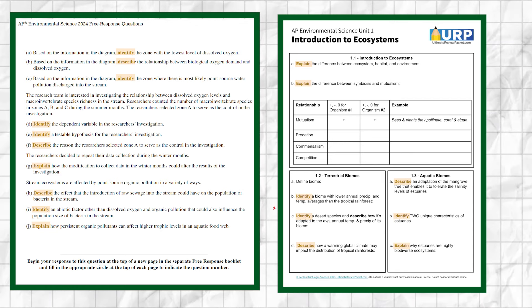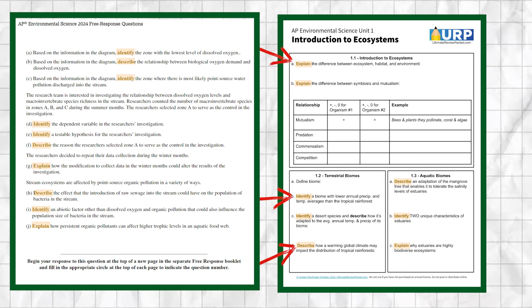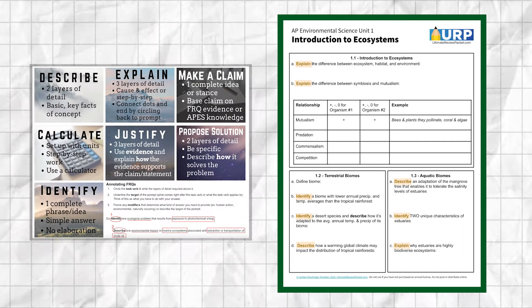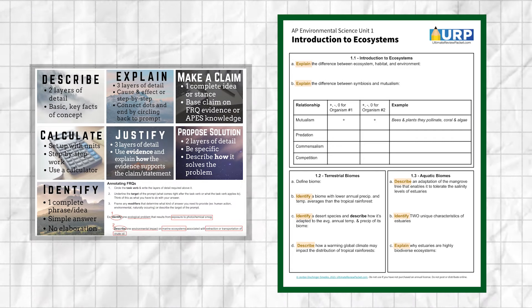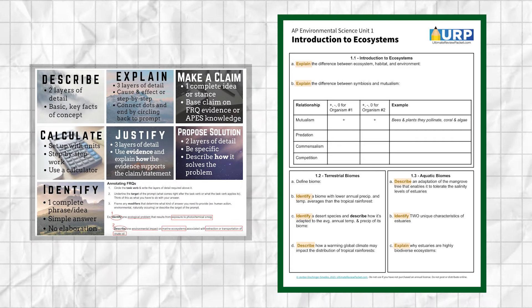In each question on the unit one study guide you'll see a bold task verb like identify, describe, or explain. If you want a resource that tells you exactly how to answer each of these different kinds of FRQs, you can grab a copy of the FRQ task verb sheet with your free preview of the Ultimate Review Packet. It's so important that you learn how to answer task verbs with the appropriate amount of detail so that you work smarter, not harder, when it comes time for that exam in May.